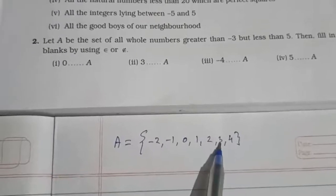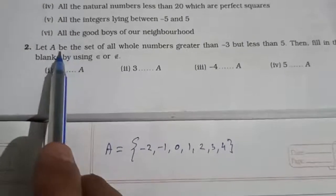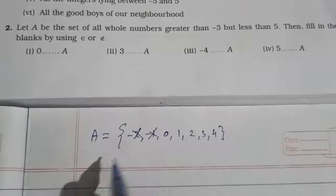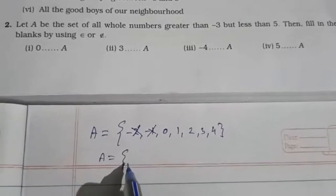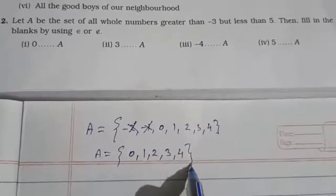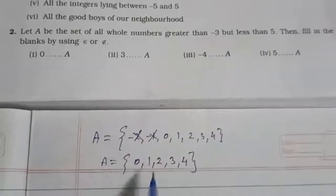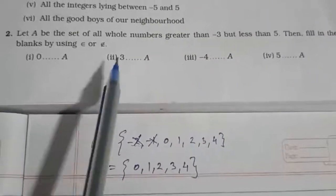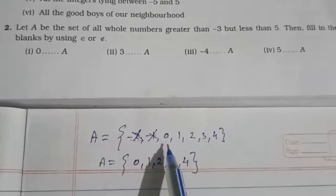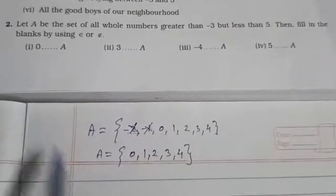One more condition — they said A should be a whole number. Whole numbers start from zero, so we have to remove minus two and minus one. So set A is {0, 1, 2, 3, 4}. This is because it should be greater than minus three, less than five, and a whole number. So set A = {0, 1, 2, 3, 4}.